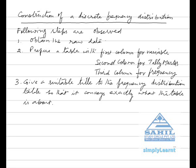Construction of a discrete frequency distribution - the following steps are observed: 1. Obtain the raw data. 2. Prepare a table with first column for variable, second column for tally marks, third column for frequency. 3. Give a suitable title to the frequency distribution table so that it conveys exactly what the table is about.